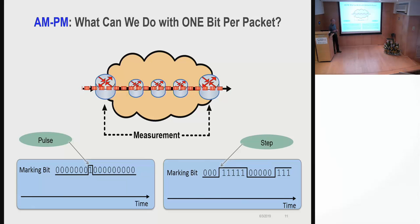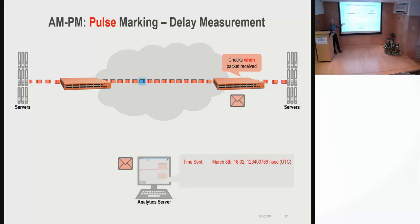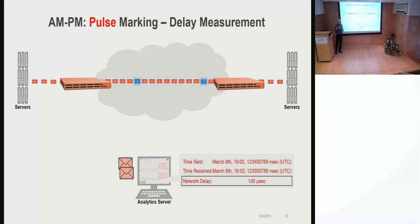Let's see how you can use pulse marking in order to measure delay in the network. The idea is most of the time the marking bit has a constant value. Occasionally you have one special packet which has a different value. Whenever the devices detect that special packet, they measure the time of reception of that packet, and they send that timestamp to an external server. And then the server, based on comparing between these two timestamps, can compute the delay between the two devices in this case.